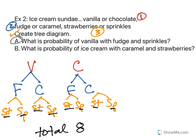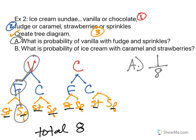OK, let's look at letter A. What is the probability of vanilla with fudge and sprinkles? Let's start with vanilla, going to fudge, and then sprinkles. There is exactly one of those. And there's eight total. So the probability of A would be 0.125 or one eighth.